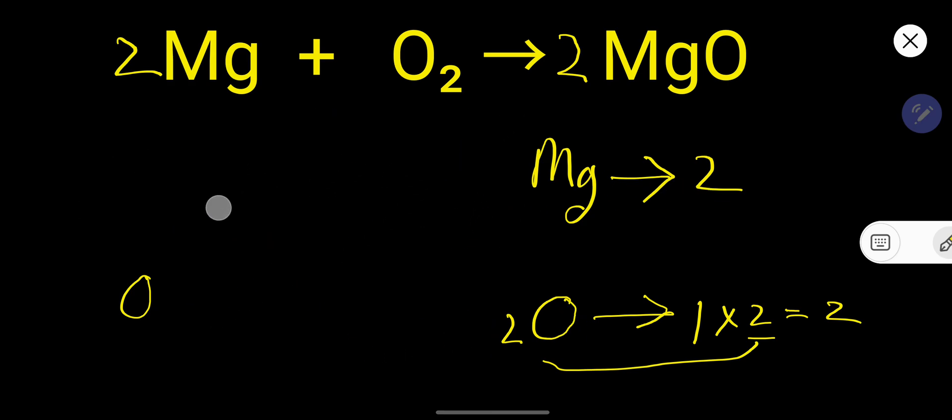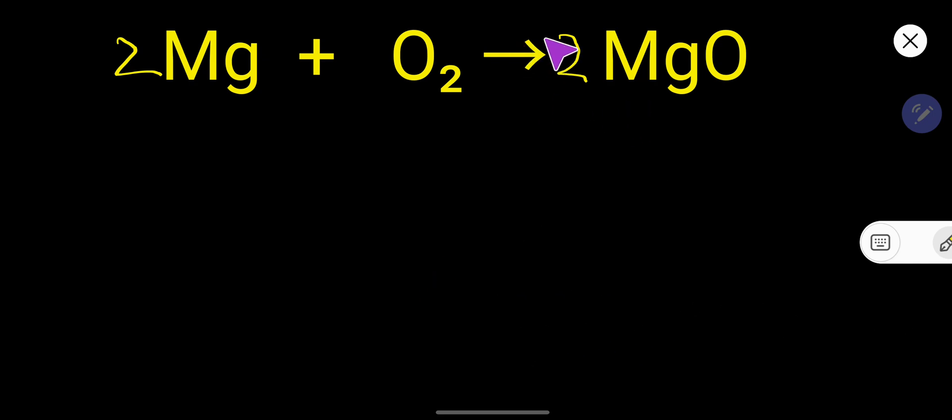So you can say that this is the balanced chemical equation. At last, you have to use this arrow sign. Thank you for viewing this video, be well.